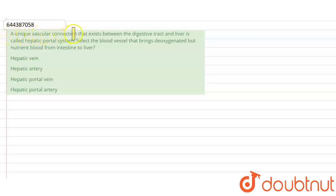A unique vascular connection that exists between the digestive tract and liver is called the hepatic portal system. Select the blood vessel that brings deoxygenated but nutrient-rich blood from intestine to liver. The options are: hepatic vein, hepatic artery, hepatic portal vein, and hepatic portal artery.